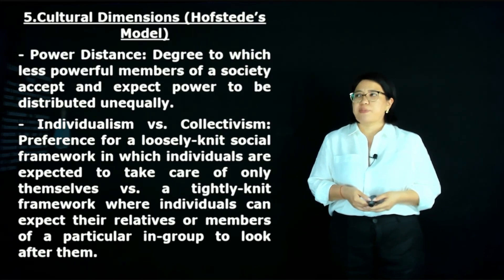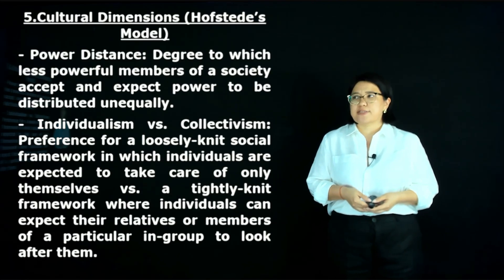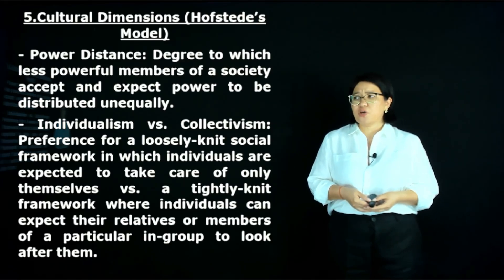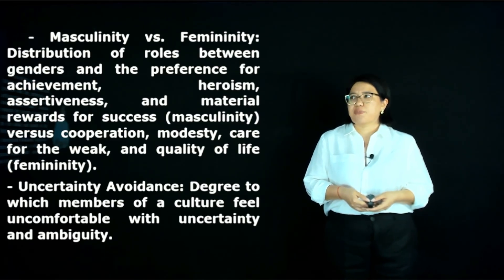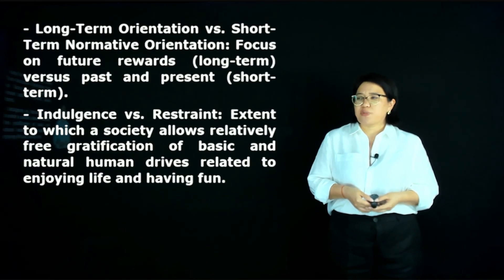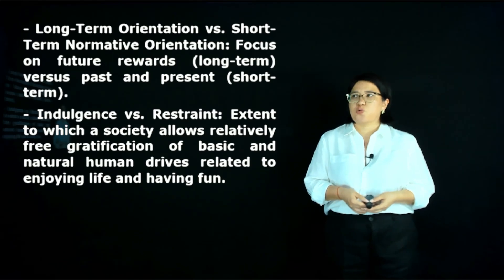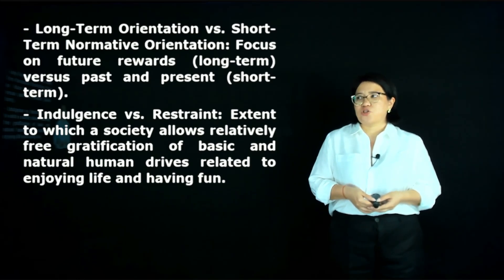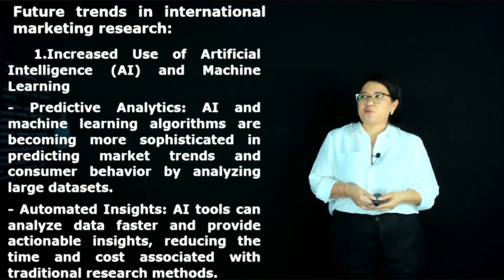Cultural dimensions — the Hofstede model: power distance refers to the degree to which less powerful members of society accept and expect power to be distributed unequally. Other dimensions include distribution of roles between genders and the preference for achievement, assertiveness, and material reward for success. Long-term versus short-term normative orientation focuses on future rewards versus past and present. There is also the dimension of indulgence — the extent to which a society allows relatively free gratification of basic human drives related to enjoying life and having fun.